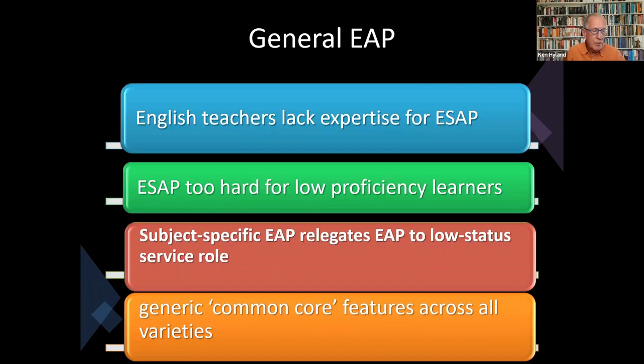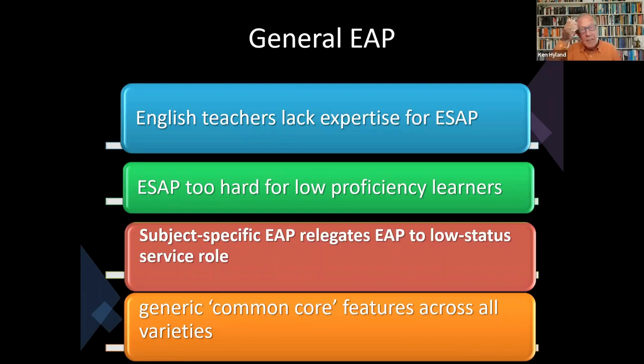There's also an argument that subject-specific skills relegate EAP to a low-status service industry supporting the faculties — this was Henry Wooderson's argument, where he said that EAP was not education but training; it was too specific to be education. And the fourth argument is that there are generic common core features which are the same across all disciplines. Hutchinson and Waters' famous book ESP back in 1987 claimed that there are insufficient variations in the grammar, functions or discourse structures of different disciplines to justify subject specificity.